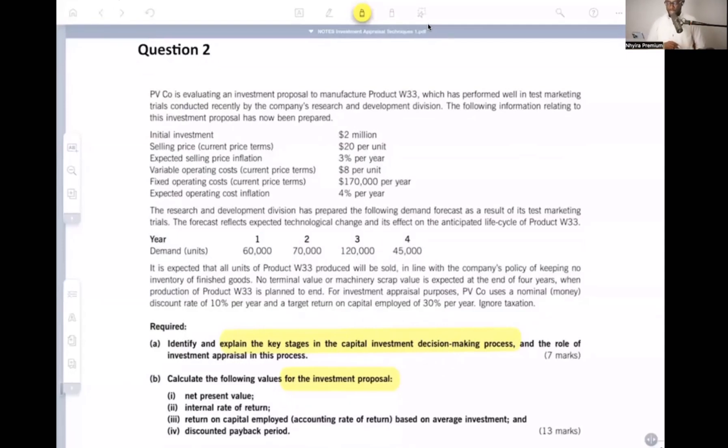PVCo is evaluating an investment proposal to manufacture Product W33, which has performed well in test marketing trials conducted recently by the company's research and development division. The following information relating to this investment proposal has now been prepared. So we see what we have at our disposal here. Initial investment, two million. That's good for us in that case. Selling price, you want to pay attention to what is in the brackets there. It says current price terms, so it means today. In today's terms, that is the selling price.